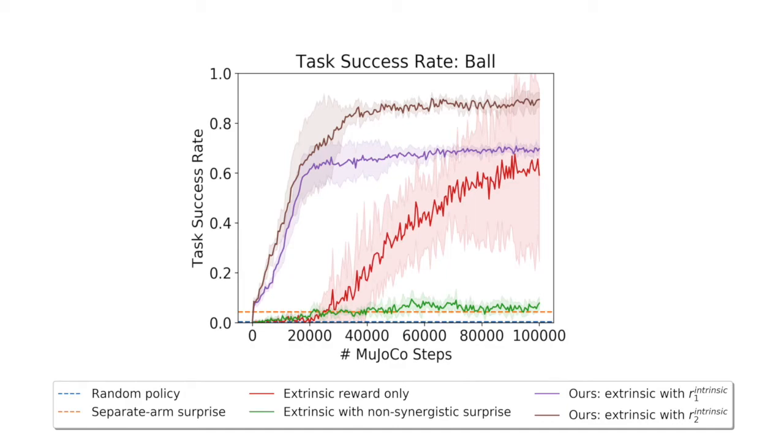Given enough training samples, extrinsic reward only policies start to perform decently well. However, synergistic intrinsic rewards accelerate learning, solving the task consistently with around five times fewer samples.